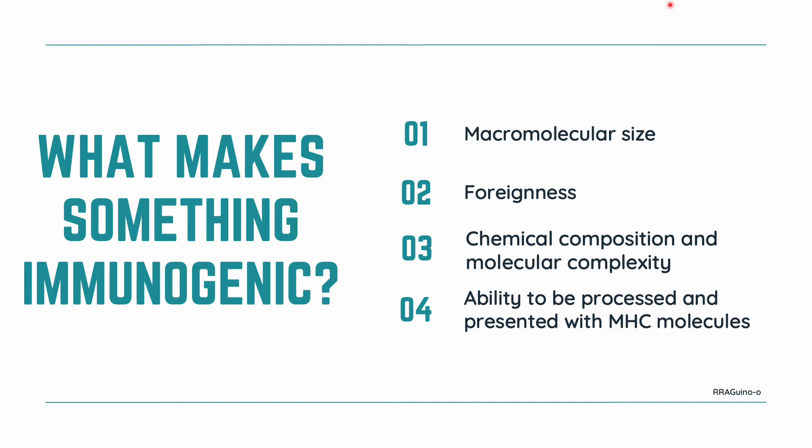For example, if we have an antigen from a bacteria and an antigen from a chimpanzee, the antigen from the bacteria would be more immunogenic in a human host. Next, we have the chemical composition and molecular complexity of the substance. Most immunogens are proteins and polysaccharides. Proteins are more immunogenic than polysaccharides because they have a more complex structure — they are made up of a variety of amino acids and have secondary, tertiary, and even quaternary arrangements. Meanwhile, polysaccharides are usually just simple chains of repeating monosaccharides.